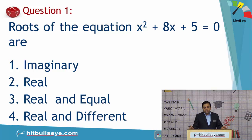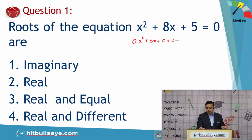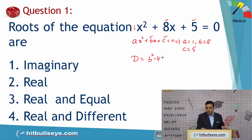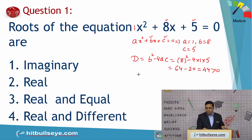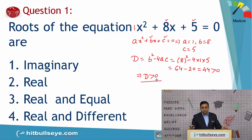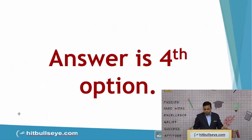Here is the first question: we are given an equation and have to find the nature of the roots. Comparing with ax² + bx + c = 0, we get a = 1, b = 8, and c = 5. The discriminant is b² − 4ac = 64 − 20 = 44. Since this is positive, the roots will be real and distinct. So the answer is the fourth option.